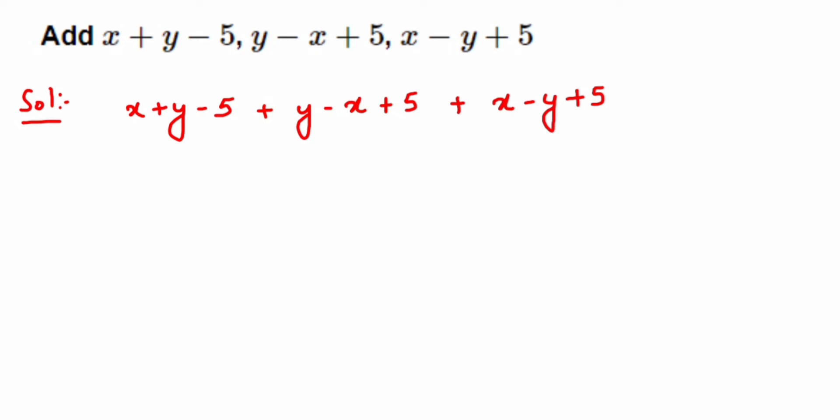Now we're going to add the like terms. We have x minus x and one more x. Plus x and minus x will get canceled, so we're left with only x with a positive sign.